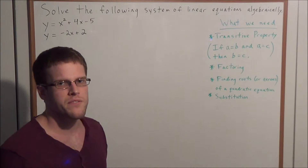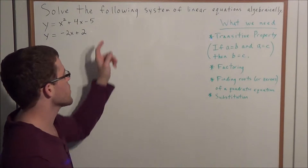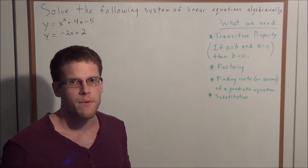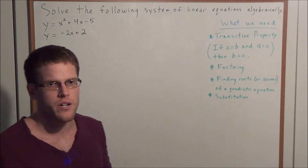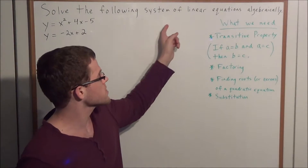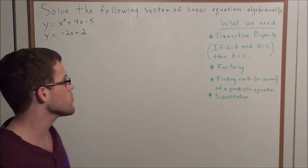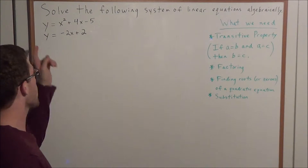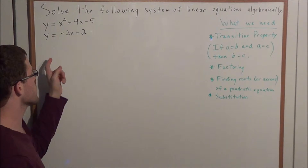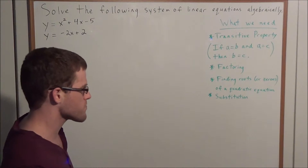Hello YouTube students, my name is Vincent and today I want to take a look at quadratic linear systems of equations. In particular, I want to look at the problem: solve the following system of equations algebraically, where we have y equals x squared plus 4x minus 5, and y equals negative 2x plus 2.